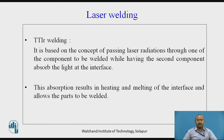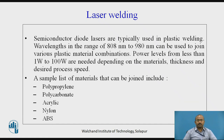In TTIR welding, laser radiation passes through one of the components to be welded while the second component absorbs the light at the interface. This absorption results in heating and melting of the interface and allows the parts to be welded. Semiconductor diode lasers are typically used in plastic welding. Wavelengths in the range of 808 nm to 980 nm can be used to join various plastic material combinations. Power levels from less than 1 Watt to 100 Watts are needed depending on the material, thickness, and desired process speed. Materials that can be joined include polypropylene, nylon, ABS, and so on.